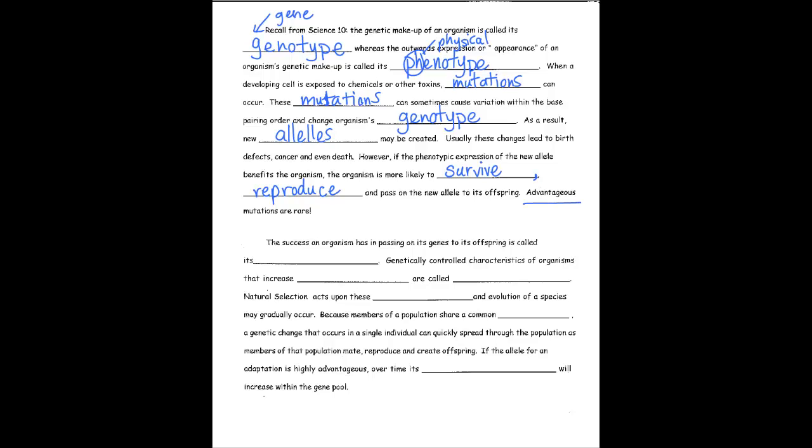So let's keep that in mind as we move forward. Advantageous mutations are rare. Moving on, the success an organism has in passing on its genes to its offspring or babies is called its fitness. So this is definitely a different definition for fitness in biology than when you talk about fitness when you're going to the gym or in physical education.